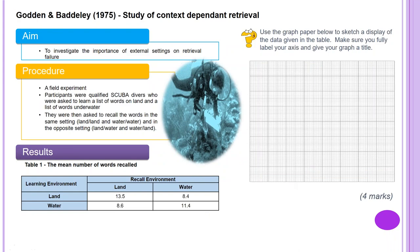Godden and Baddeley in 1975 conducted a study of context dependent retrieval. The aim was to investigate the importance of external settings on retrieval failure. It was a field experiment. Participants were qualified scuba divers who were asked to learn a list of words on land and a list of words underwater. They were then asked to recall the words in the same setting — land/land and water/water — and in the opposite setting — land/water and water/land. The results are summarised in Table 1.